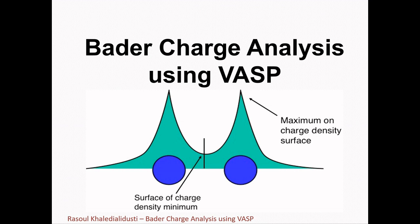I will start with Bader charge analysis using VASP. Richard Bader from McMaster University developed an intuitive way of dividing molecules into atoms. His definition of an atom is based purely on the electronic charge density. Bader uses what are called zero flux surfaces to divide atoms. A zero flux surface is a two-dimensional surface on which the charge density is a minimum perpendicular to the surface. Typically in molecular systems, the charge density reaches a minimum between atoms, and this is a natural place to separate atoms from each other.